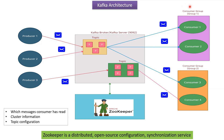Here you can see consumer group 1 and consumer group 2. In a Kafka system, there can be multiple consumer groups. Consumer group 1 has 2 consumers, and consumer group 2 has 2 consumers. What a consumer does is consume messages from the Kafka topic that were published by producers.